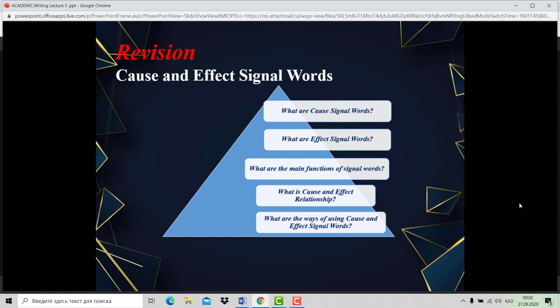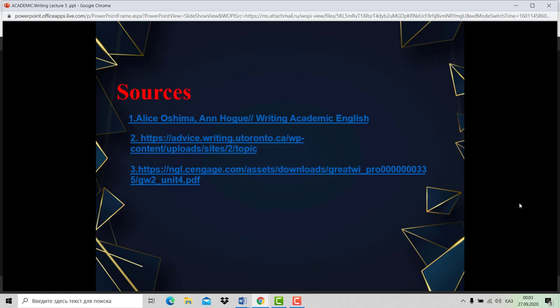As a revision, answer these questions: What are cause signal words? What are effect signal words? What are the main functions of signal words? What is cause and effect relationships? What are ways of using cause and effect signal words? And what sources can you use to prepare practical lessons? Thank you.